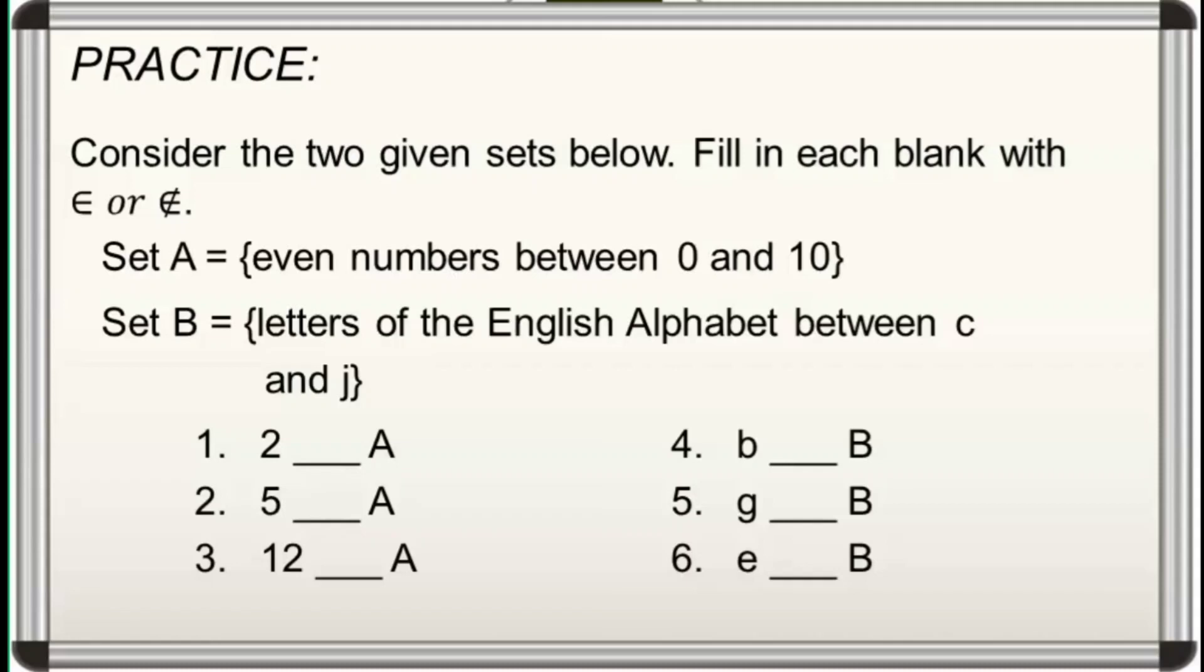In answering this one, magiging mas madali kung ililista muna natin lahat ng elements ni set A at ni set B. So for set A, which is composed of even numbers between 0 and 10, we have 2, 4, 6, and 8.